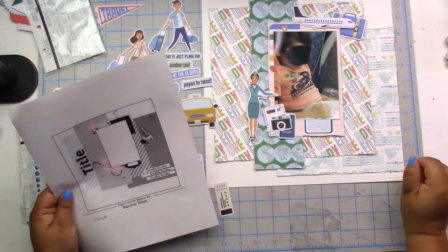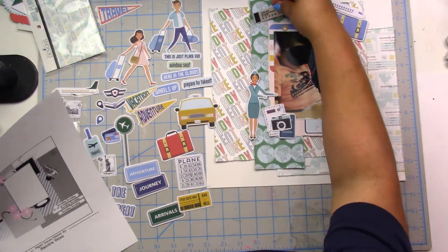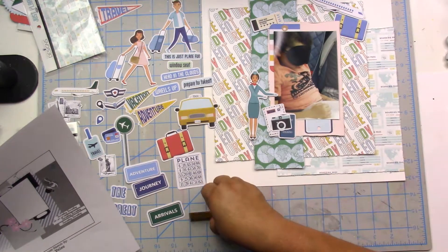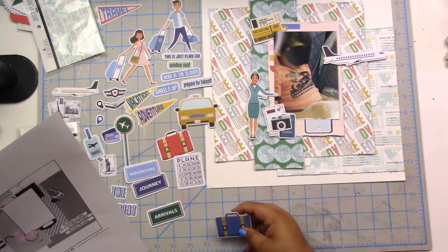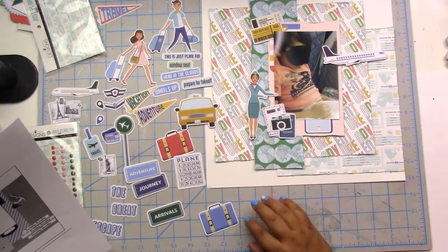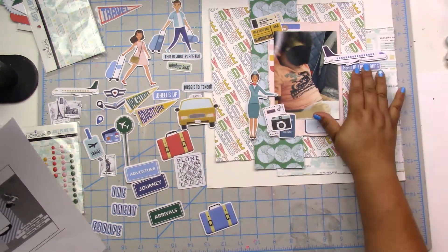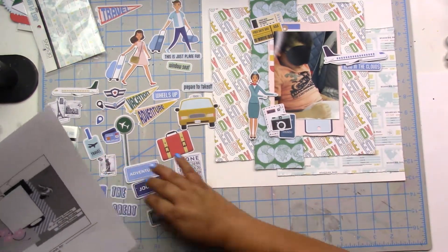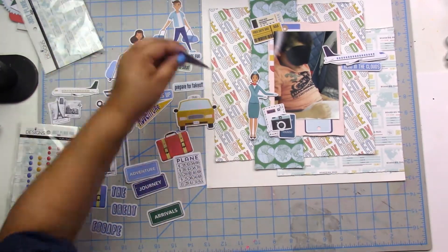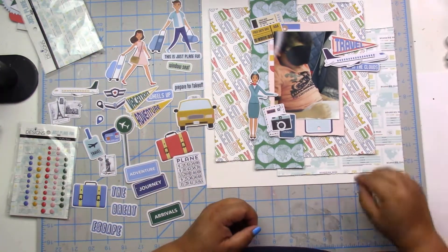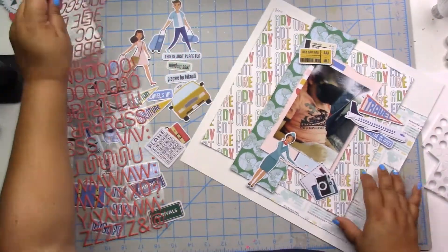I did restock my adhesive roller from scrapbook.com. It's a really good one. I use the permanent adhesive, but there's like a dotted one that's not so permanent or removable. They have a six pack, so I bought two three-packs. Yes, so I had six total.